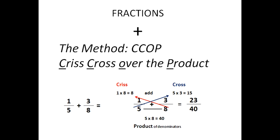You will notice that eight times one is eight — this is called the criss — and you put it up to the left. The cross: five times three is fifteen, put that up to the right. You add eight and fifteen to obtain twenty-three, which is the numerator of the answer. To find the denominator, you do five times eight, which is forty.